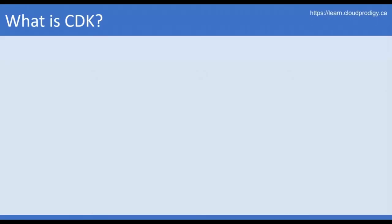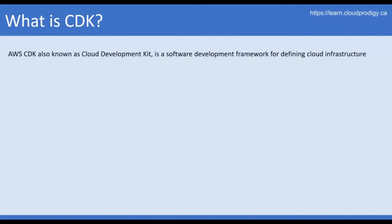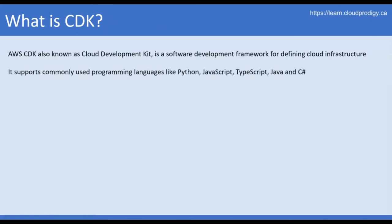In this video, I will explain what CDK is. CDK, which is also known as Cloud Development Kit, is a software development framework created by AWS for defining cloud infrastructure. It supports commonly used programming languages like Python, JavaScript, TypeScript, Java, and C#, which means you can use any of these languages to start provisioning your infrastructure.